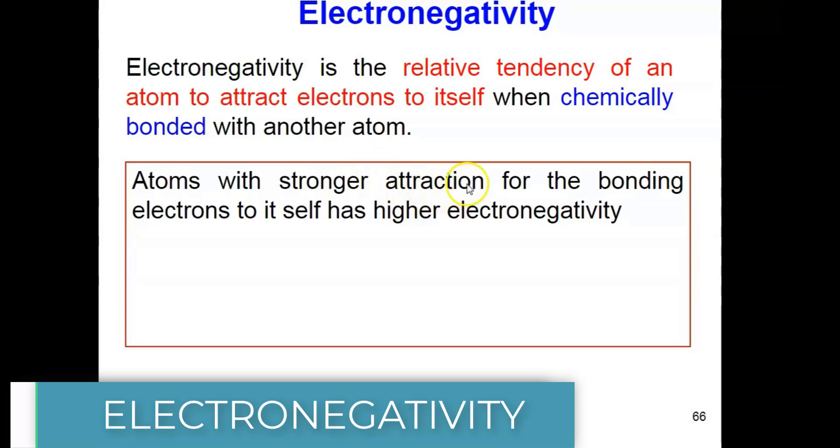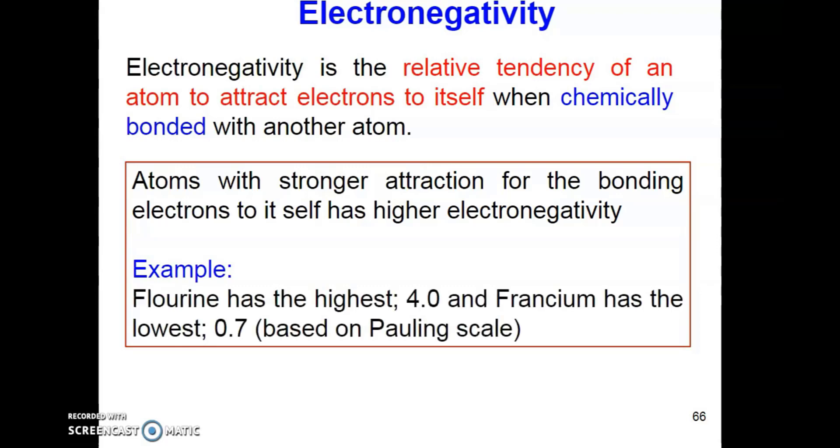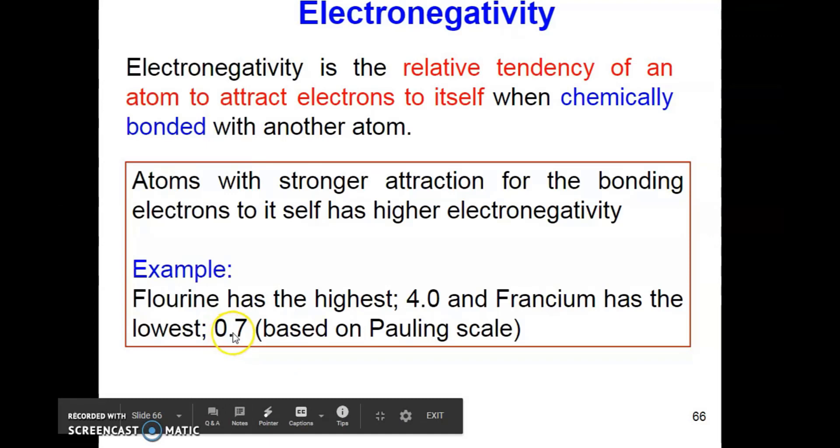Atoms that has higher electronegativity has stronger attraction for the bonding electrons to itself. This can be determined by looking at the magnitude of the Pauling scale. We have here fluorine and francium as the example. Fluorine has the highest magnitude of Pauling scale which is 4.0 while francium has the lowest magnitude which is 0.7.